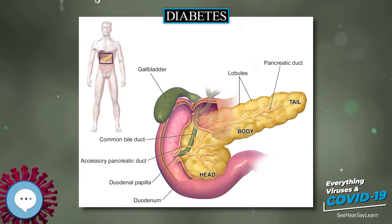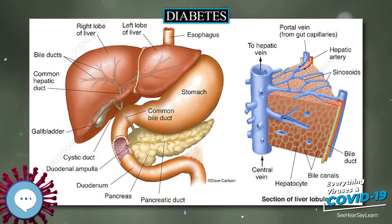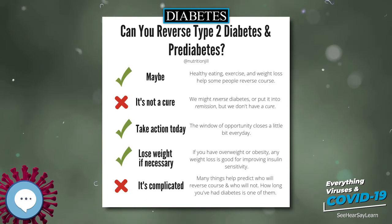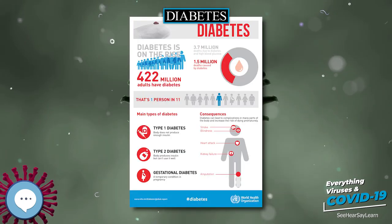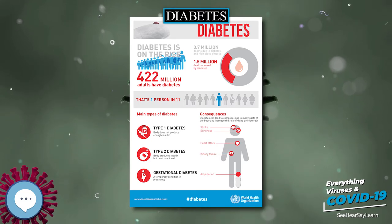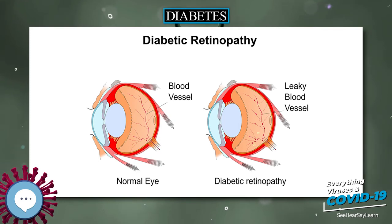Although it has been called juvenile diabetes due to the frequent onset in children, the majority of individuals living with type 1 diabetes are now adults. Brittle diabetes, also known as unstable diabetes or labile diabetes, is a term that was traditionally used to describe dramatic and recurrent swings in glucose levels, often occurring for no apparent reason in insulin-dependent diabetes. This term, however, has no biologic basis and should not be used.